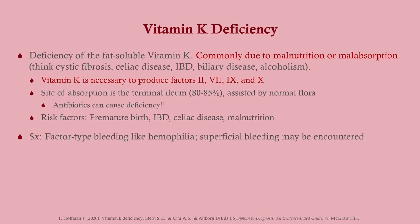Vitamin K deficiency is exactly what it sounds like — usually due to malnutrition or malabsorption. Think of babies who don't get their vitamin K shots at birth, such as in home births. Also think of people with malabsorptive syndromes like celiac disease or inflammatory bowel disease. Vitamin K is primarily absorbed in the terminal ileum, so Crohn's ileitis can be a problem. Patients on antibiotics may also be affected since normal flora assist vitamin K absorption. Risk factors include premature birth, IBD, celiac, and malnutrition.